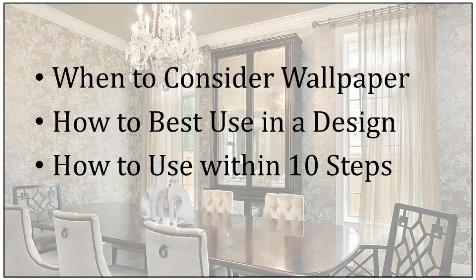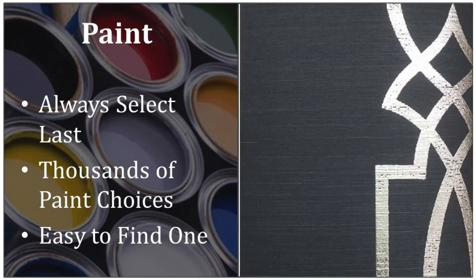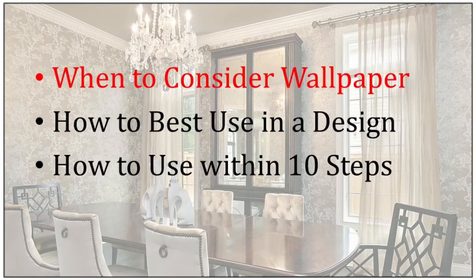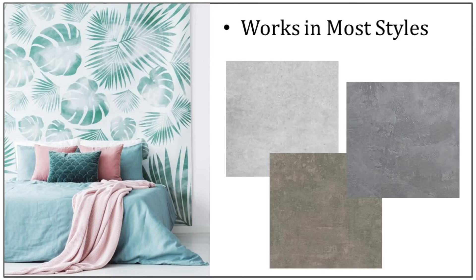In this lecture, I want to talk about when you should consider using wallpaper, how to best utilize it in a room design, and how to incorporate it into the 10-step process. Wallpaper is different and unique from paint. Paint is what I always select last, partly because there are thousands of paint color choices, so it's easy to find one that works. Wallpaper, on the other hand, can often be the inspiration for a room design, just like a rug or fabric can. Wallpaper works in most interior design styles — even in a style like industrial, there are excellent faux concrete papers that would look great.